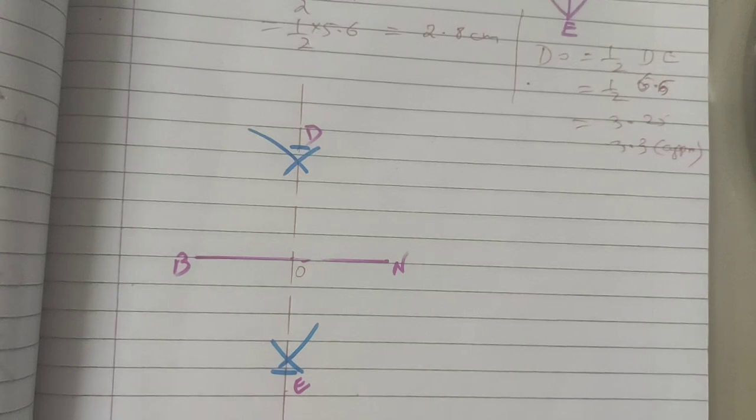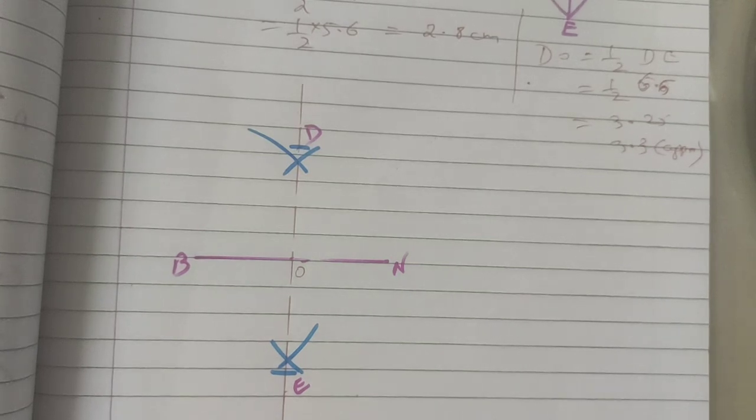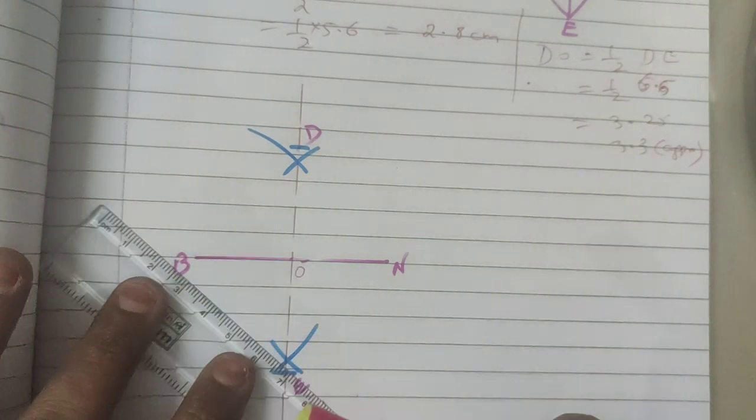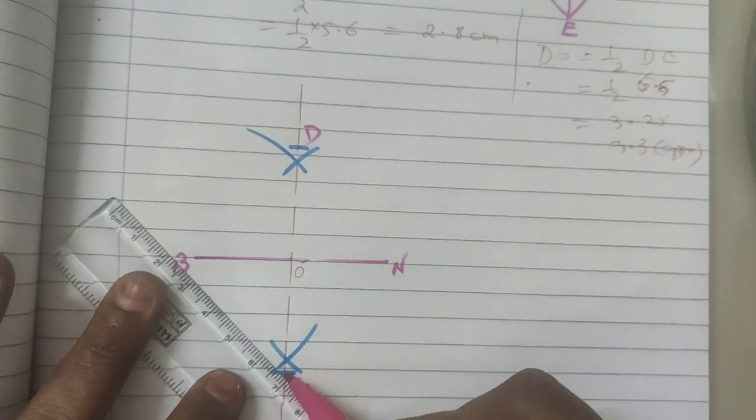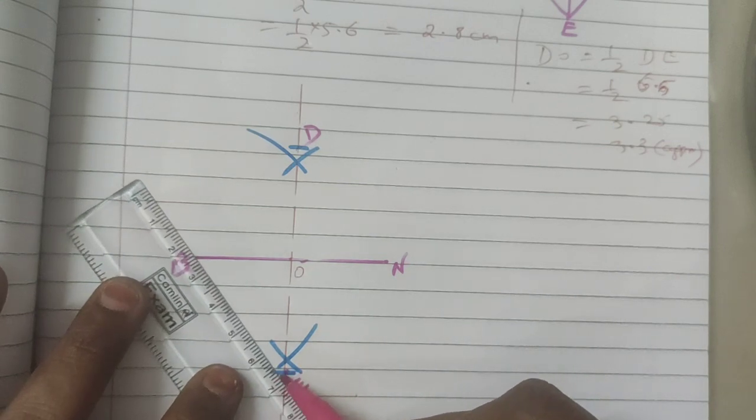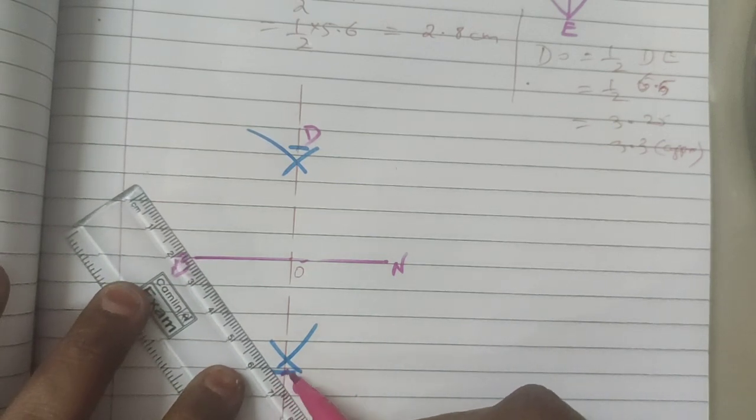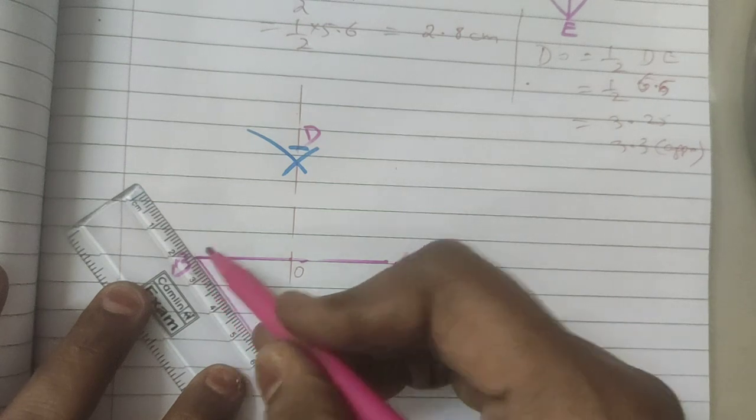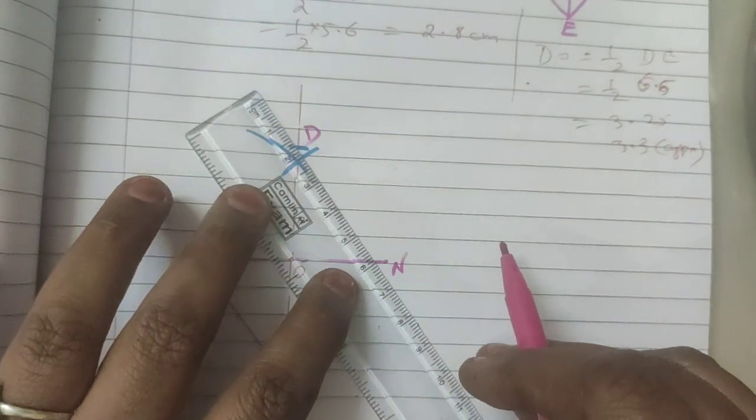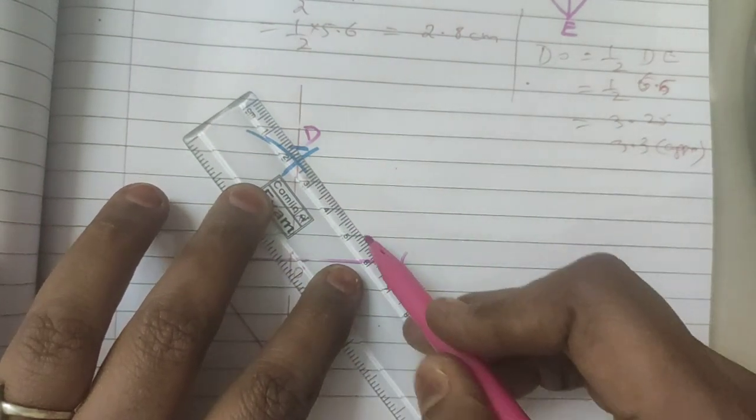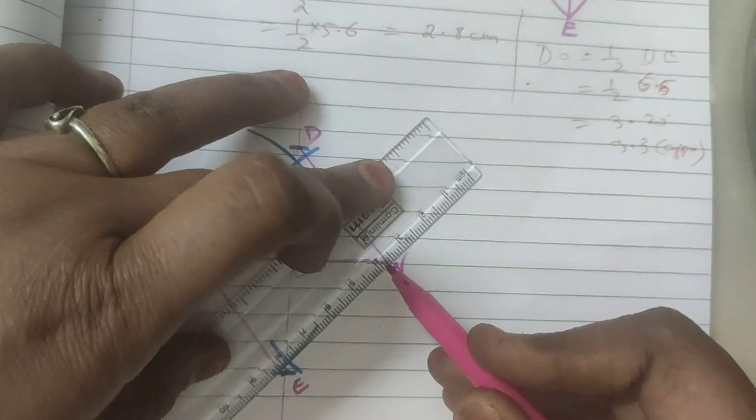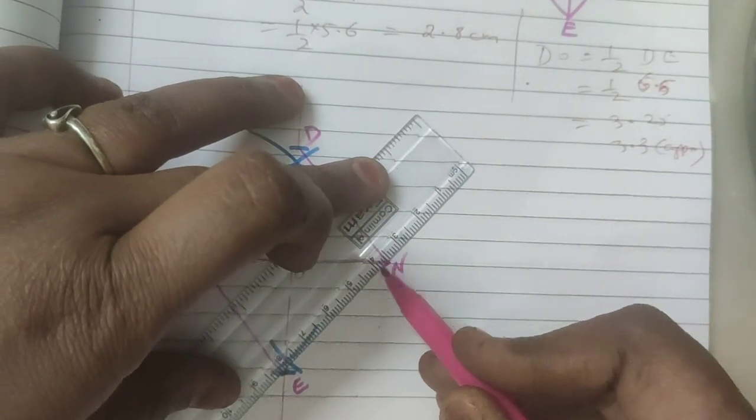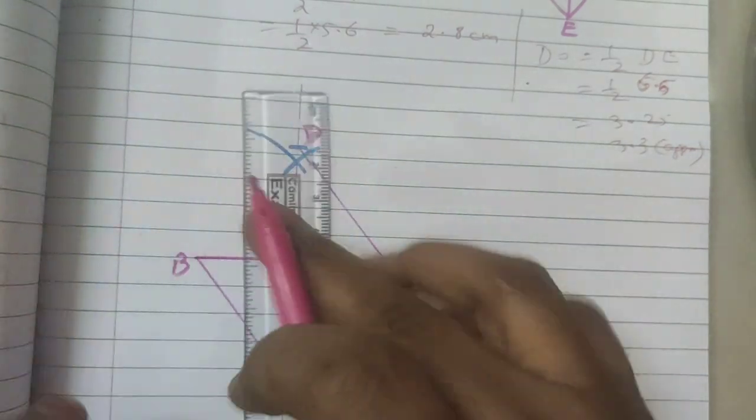So now join. Join B, E. Join all the 4 sides with this measurement.